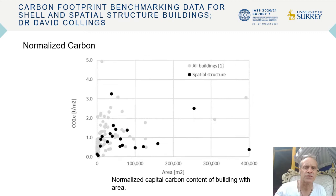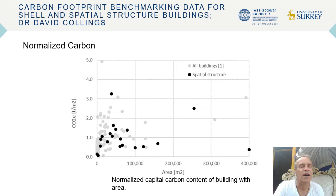Normalised carbon: you can see the range really spans from a few hundred kilograms per square meter up to over three tonnes per square meter for some structures, so there is a significant range of normalised carbon.